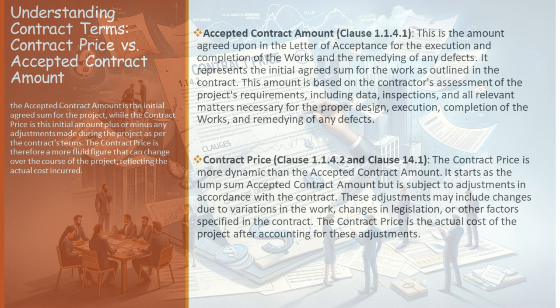But what about situations where the actual progress of the project is less than what was initially planned? This is where Clause 14.4 comes into play. If the contract includes a schedule of payments, and the actual progress is less than expected, the engineer may revise the installments. This ensures that payments are aligned with the actual progress of the work, maintaining fairness and transparency in financial dealings.